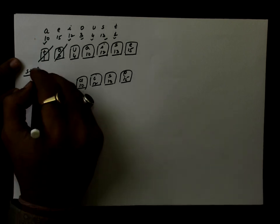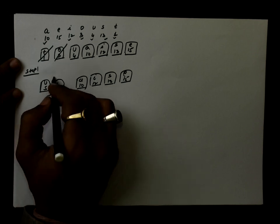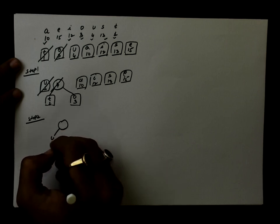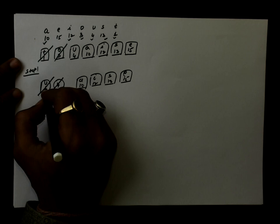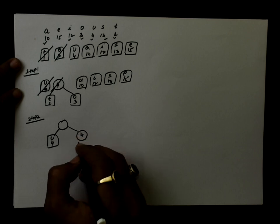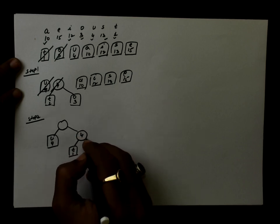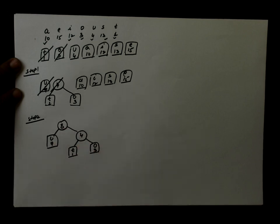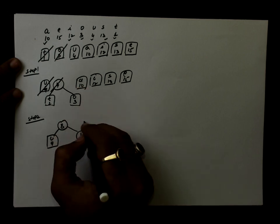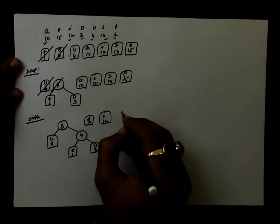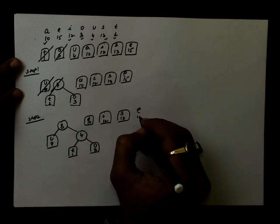In step 2, we again do similar work — we delete the two front elements and create a new node. The left is set as U with 4 and the right is the previously created node with 4 (T=1, O=3). The sum of these two is 8, which is set as the data value of this node. Then 8 is inserted at the front of the priority queue, followed by A with 10, I with 12, S with 13, and E with 15.